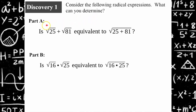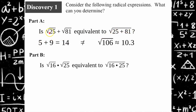Welcome back. In Part A, it asks if the square root of 25 added to the square root of 81 is equivalent to the square root of the radicand 25 plus 81. The square root of 25 is 5 and the square root of 81 is 9, so the sum is 14. This is not equivalent to the square root of 106, which is approximately 10.3. Therefore, adding two radicals together is an illegal algebra move — you cannot do that.